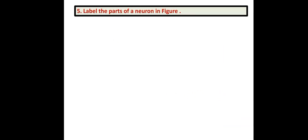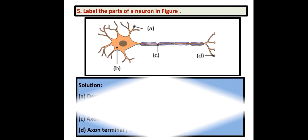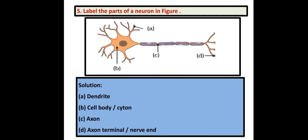Next question: Label the parts of a neuron in the figure. Here is the diagram of the neuron and you are asked to label four parts. A is the dendrite. B is the cell body, otherwise known as cyton. C is the axon. D is the axon terminal, also known as the nerve end.